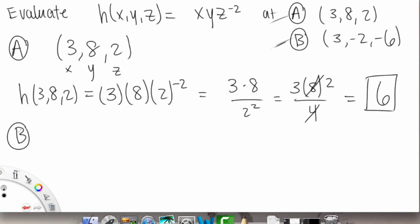Now let's work with B. So our point for B is 3, negative 2, negative 6. So again, this is our x, that's our y, and this is our z.